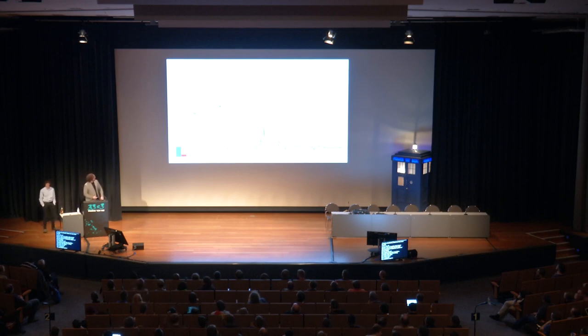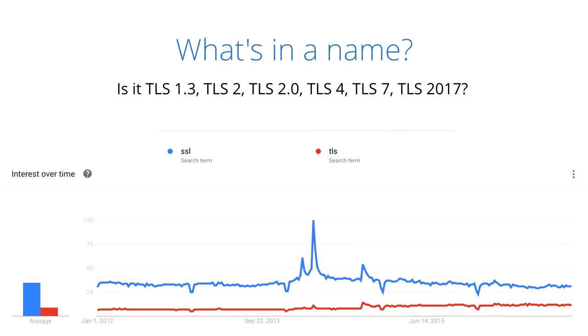The rest of the world still calls it SSL — Google Trends shows SSL is searched far more than TLS. SSL has the highest version of 3, which is part of why people thought TLS 4 was a good idea, since people are confused that 3 is higher than 1.2.